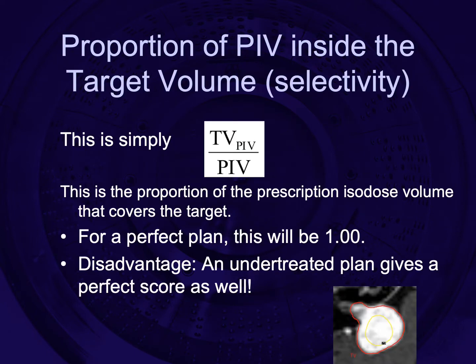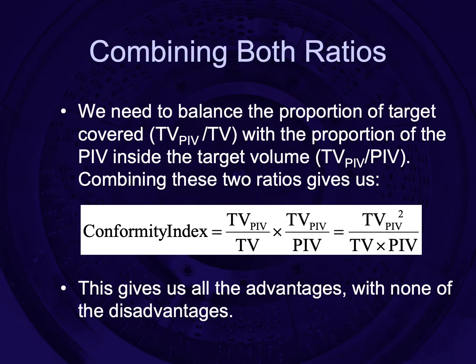So there's another ingredient we need: the proportion of the prescription isodose volume inside the target volume. That's also known as selectivity — the proportion of the prescription isodose volume that's doing good. For a perfect plan this will be one. The disadvantage is that an undertreated plan also gives a perfect selectivity score. So we've got two different indices at odds with each other.